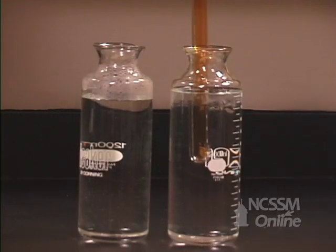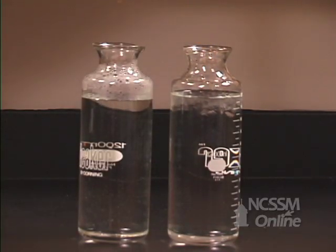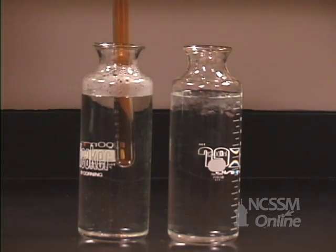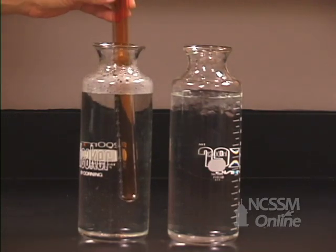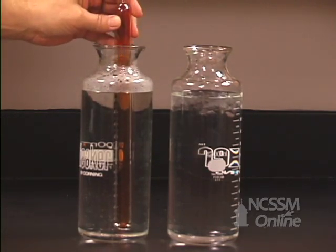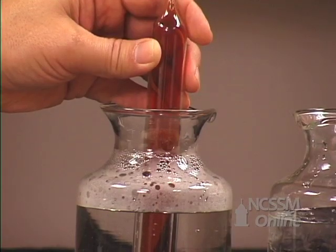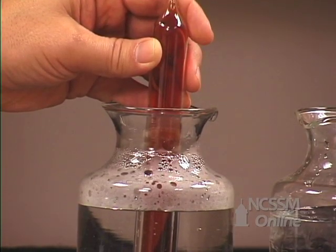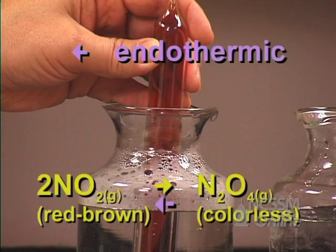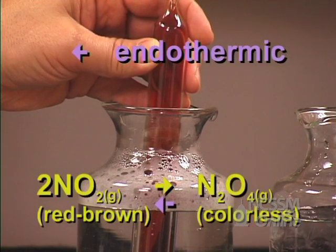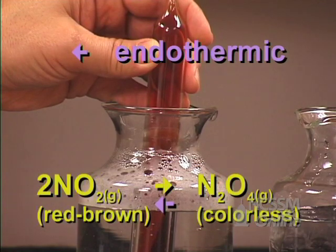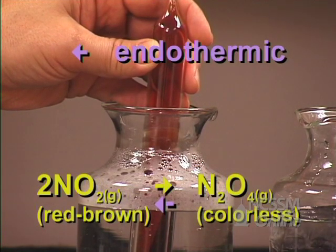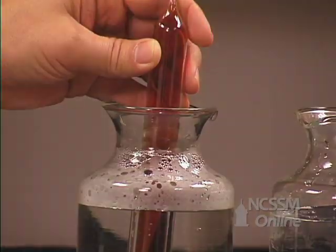We'll place the tube in a warm water bath. We notice that the color in the tube gets darker, indicating an increase in the concentration of NO2. As we warm a mixture, it shifts in the endothermic direction. The tube became darker, which indicates that the equilibrium has shifted in the reverse direction.